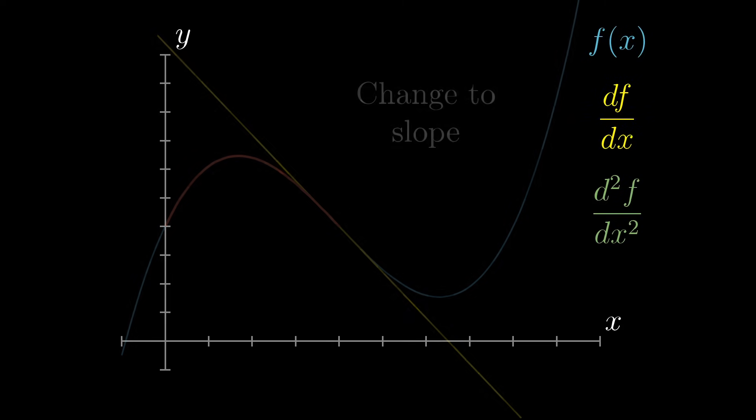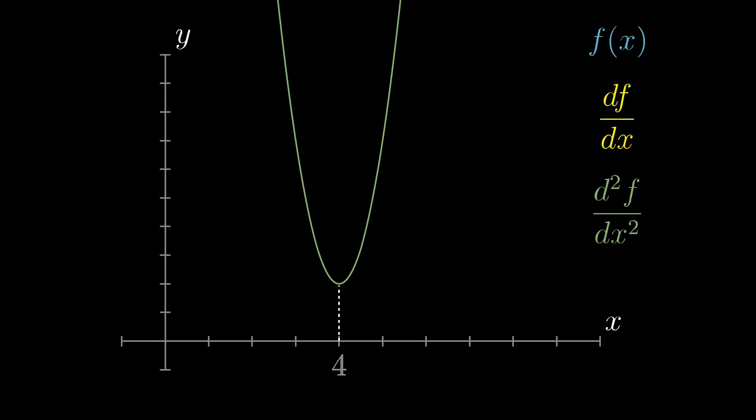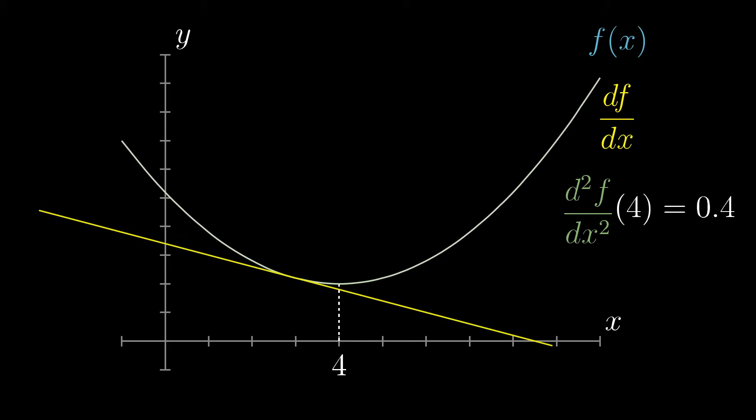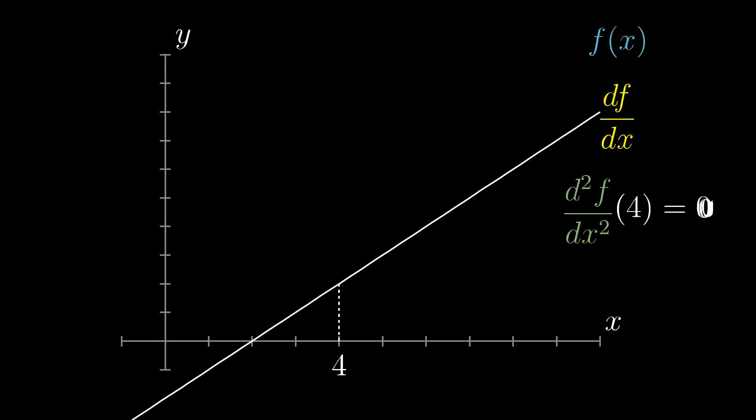For example, a graph like this one has a very positive second derivative at the point 4, since the slope is rapidly increasing around that point. Whereas a graph like this one still has a positive second derivative at the same point, but it's smaller. I mean, the slope only increases slowly. At points where there's not really any curvature, the second derivative is just zero.